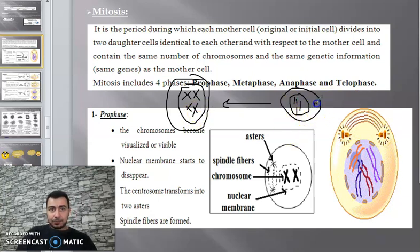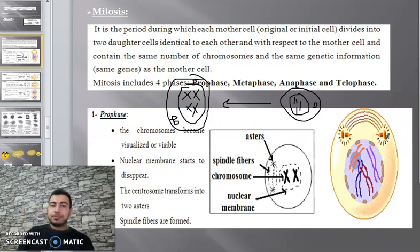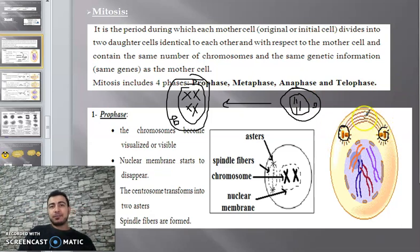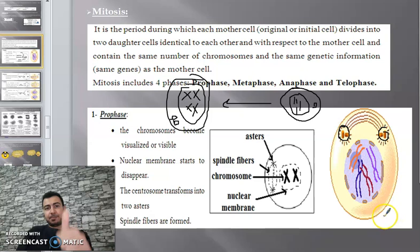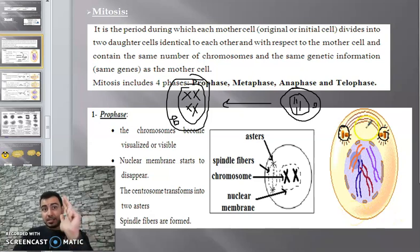The centrosomes also duplicate. It will be two centrioles or two centrosomes. They do something like an aster — they form asters. And they form spindle fibers. So during prophase: nuclear membrane disappears, asters are formed from centrioles or centrosomes, and spindle fibers are formed.